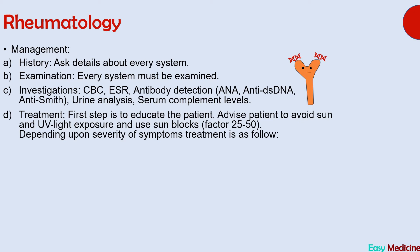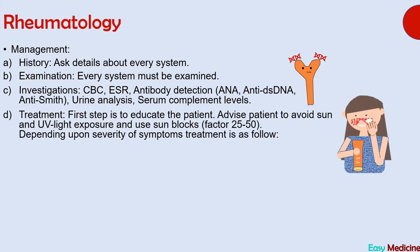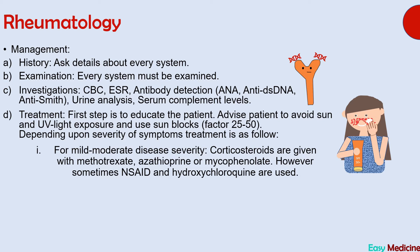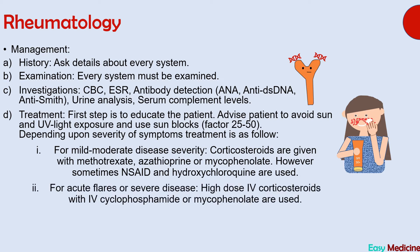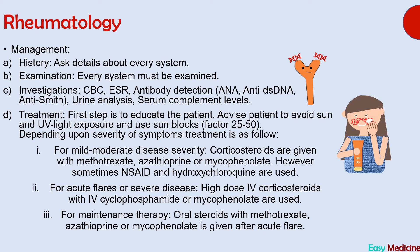Treatment begins with educating the patient, advising avoidance of sunlight and UV light, and use of sunblocks of factor 25 to 50. For mild to moderate disease, corticosteroids with methotrexate, azathioprine, or mycophenolate are given. NSAIDs and hydroxychloroquine are given for acute flares. Intravenous high-dose corticosteroids with IV cyclophosphamide or mycophenolate are used for acute worsening, such as acute renal disease or acute pericarditis.